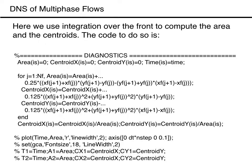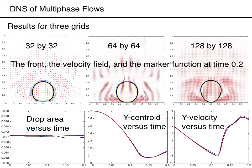In the current code we collect the various diagnostics as the code runs, so we need to add a few lines to do that at the end of the time loop. We also include a few commands to plot these quantities and to save them under a different name, which is useful when doing grid refinement or parameter studies and comparing results from multiple runs. The top three frames show the front, the velocity field, and the marker function for three different resolutions — 32x32, 64x64, and 128x128 — at time 0.2 when the drop has collided with the wall and rebounded slightly. Although the droplet shape is similar in all three frames, there are slight differences, particularly between the first two frames.